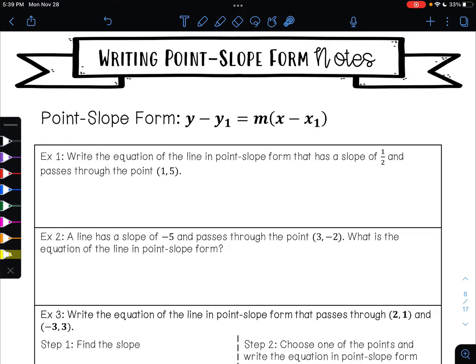To be able to write an equation in point-slope form, you need a point and you need a slope. So remember, our slope is m and our point is x₁, y₁. So those are the two things you need. Again, the point is x₁, y₁ and the slope is m. If you have those two things, you can write an equation in point-slope form.